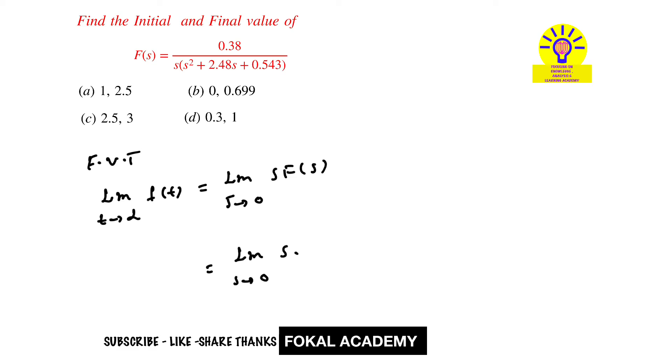F(s) is the given function: 0.38/(s(s² + 2.48s + 0.543)). The s terms cancel. Now substituting s = 0 into the equation,